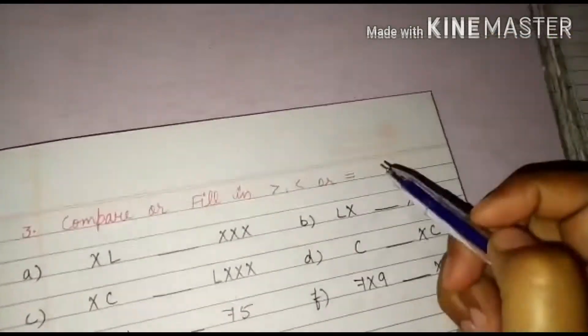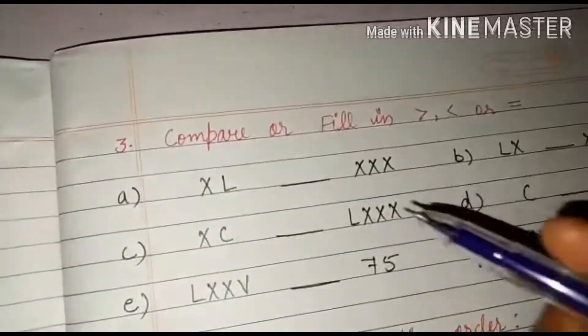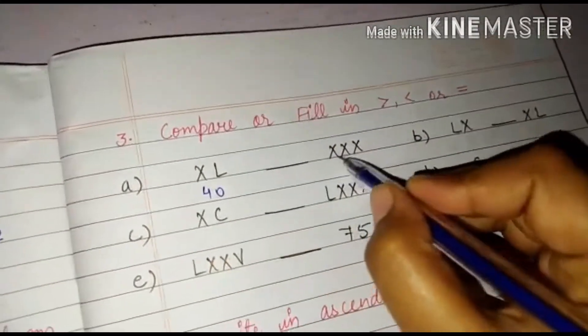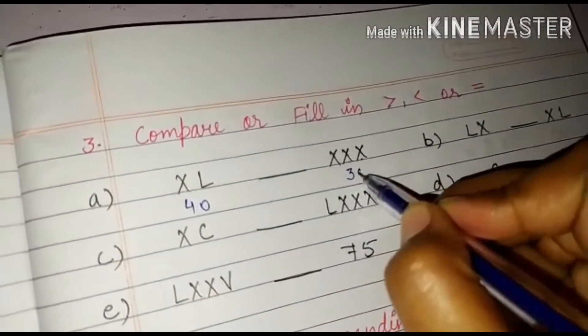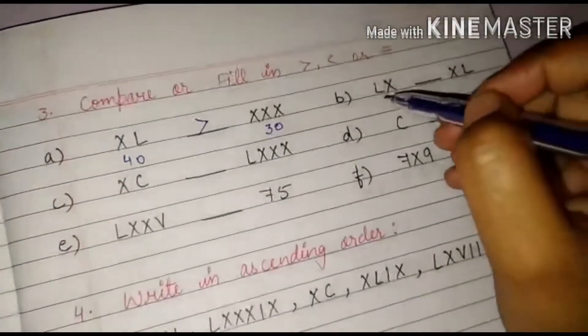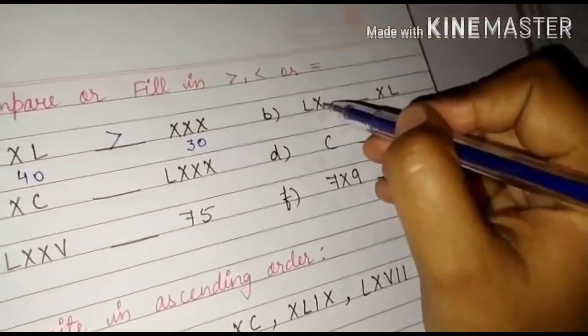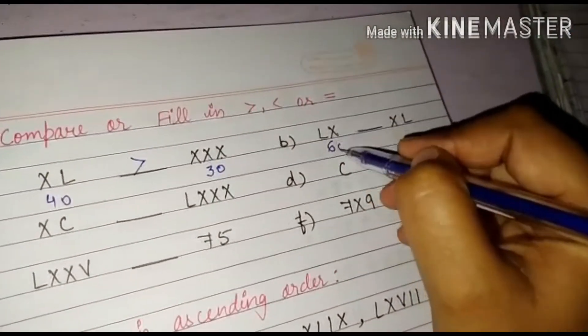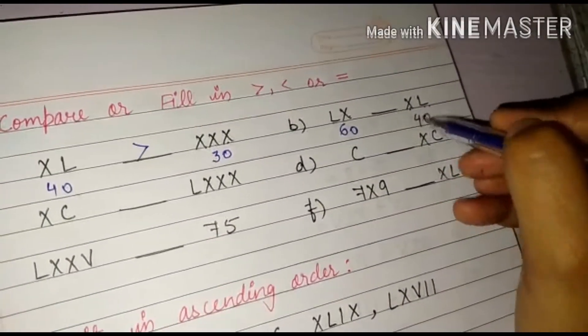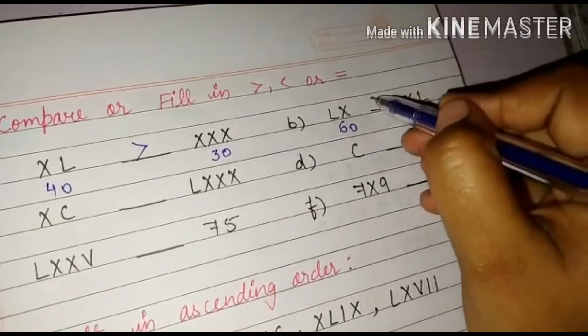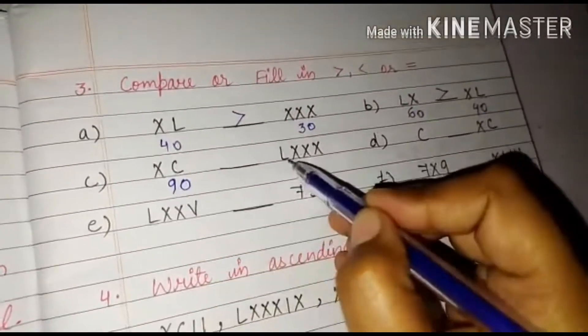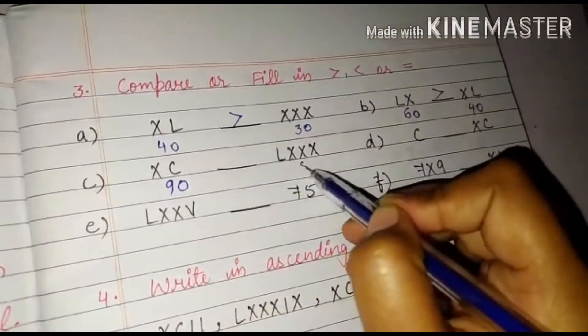Compare or fill in greater than, less than or equals to. XL. You know XL is 40. And XXX will be 30. So which will be greater? 40 will be greater. So I will mark a greater than sign here. Next is LX. LX means 50 we are adding 10. So that is 60. XL means in 50 we are subtracting 10. So that is 40. So which one is greater? 60 is greater. XC is our 90. 50, 60, 70, 80. It is 80. So which is greater? 90 is greater.